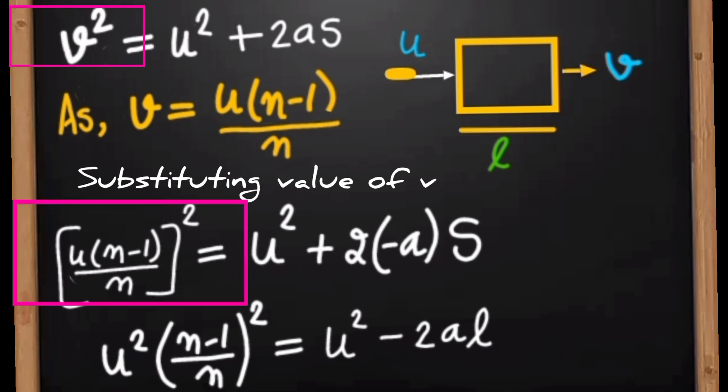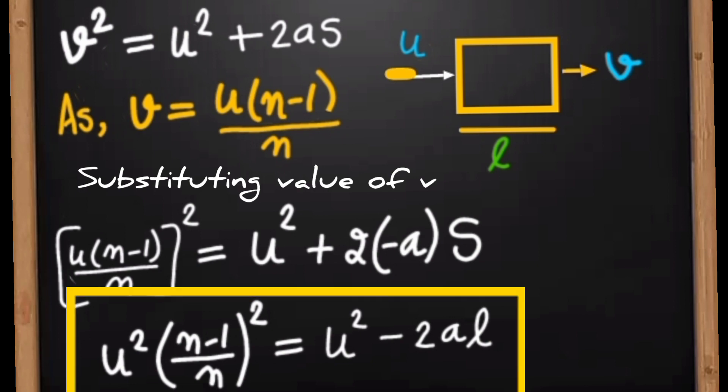That it has u(n-1)/n. So after substituting, we get this result, and we can write it as [u(n-1)/n]² = u² - 2al.